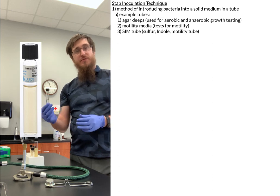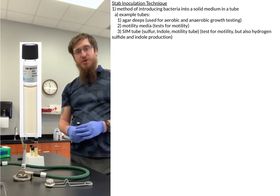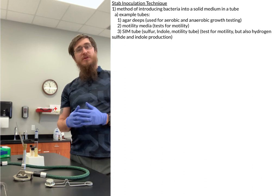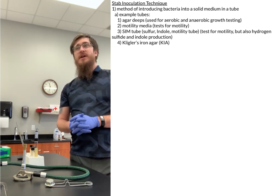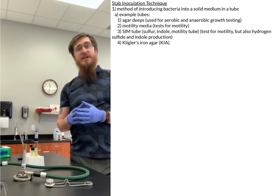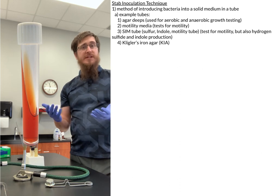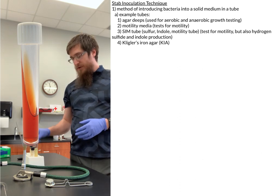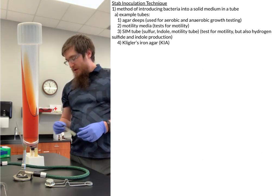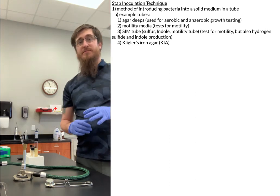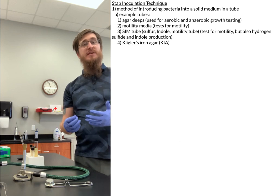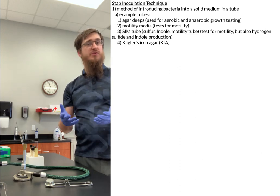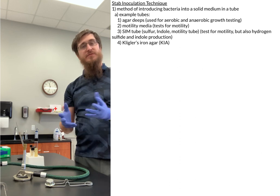The SIM tube tests for motility but also things like hydrogen sulfide production and indole production. Another type of tube that we generally inoculate with a stab is what we call a Kligler's Iron Agar tube, or KIA slant. I don't happen to have one of those with me today, so here's a picture of what that looks like — it looks like a regular slant except it's red. I'm going to use a regular slant to show that technique. These are just a couple examples of media where we use the stab technique to inoculate, and the main thing is that it's a solid agar inside the medium, so we have to stab down into it.